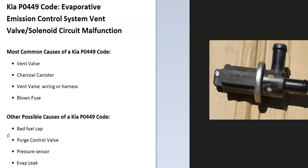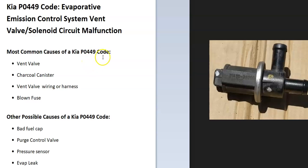The most common cause of a P0449 code is going to be the vent valve, charcoal canister, vent valve wiring, or possibly a blown fuse. There can be some other possible causes, but usually when it's those things you'll have another code too. So if you're just getting a P0449 code, more than likely it's going to be something to do with the vent valve.